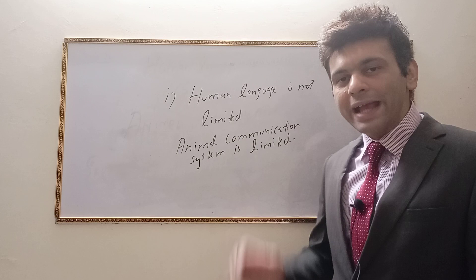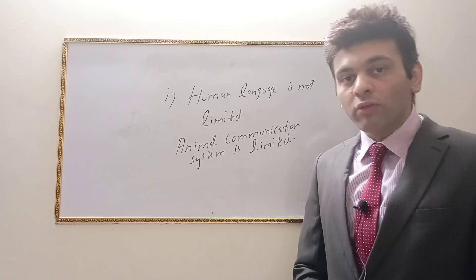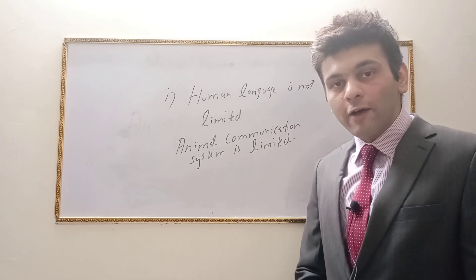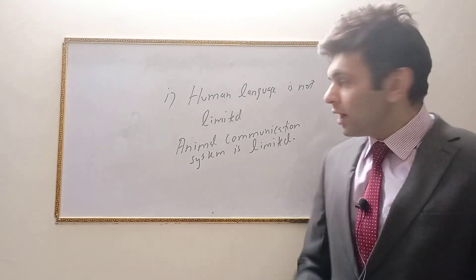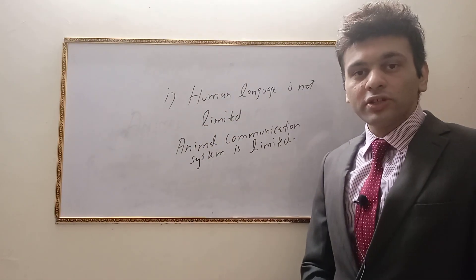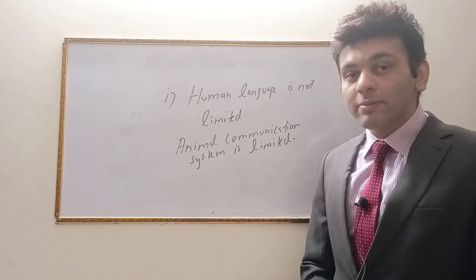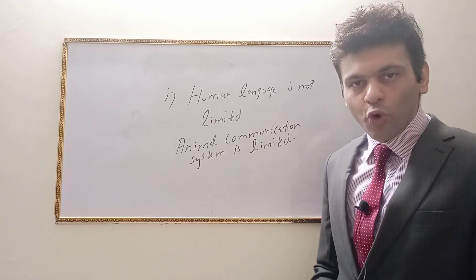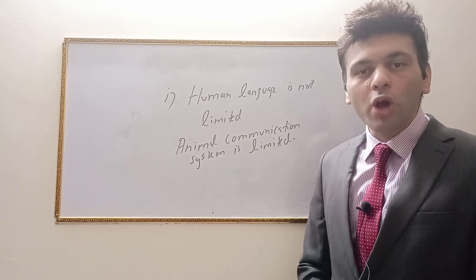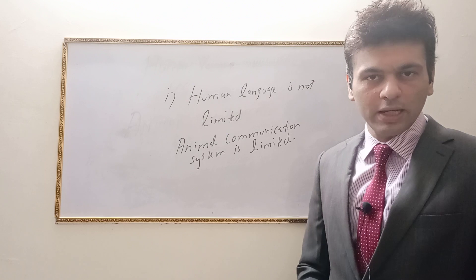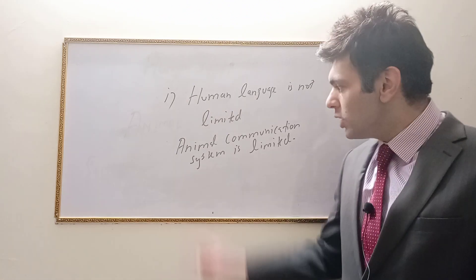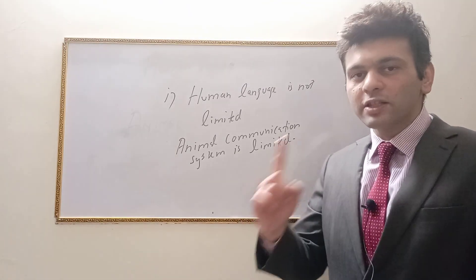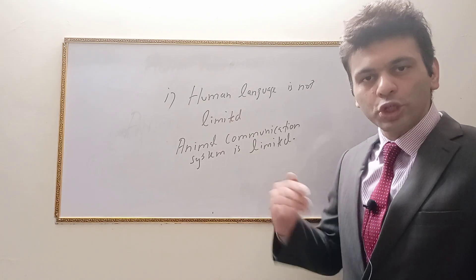Animals cannot express their anger, resentment, happiness, or love in the way humans can, because animal communication system is quite limited. Human language has a wider scope — a broad spectrum of possibilities as compared to animal communication system. That's the first difference between the two.